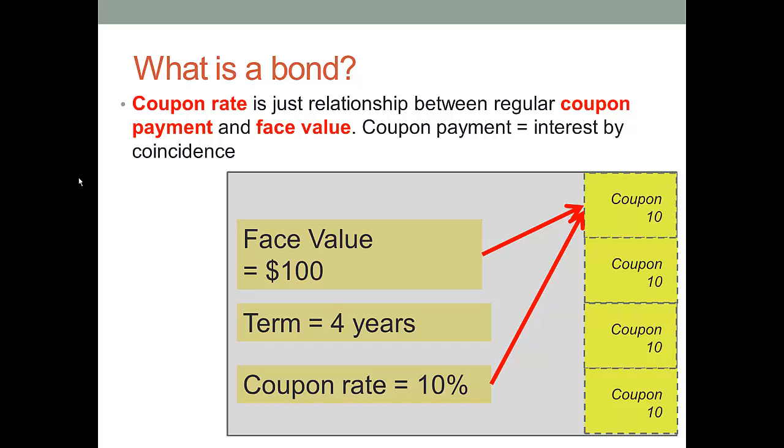The second bit of information is the term of the bond. Now, in this case, I've specified it quite simply, a term of four years. A term could be eight six-month periods. It could be 10 years. Now, why the length of the period matters is because payments are made regularly before the bond expires. And these are referred to as coupon payments. So in this example, what we've got is a bond with a face value of $100 and a term of four years. And we've got some coupons at the side.